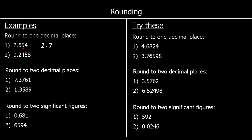And the second one: 9.2458. Again, we're rounding to one decimal place, so look at the next one down. If it's 5 or above, round up. If it isn't, leave it as it is. So we're going to leave this one as 9.2.